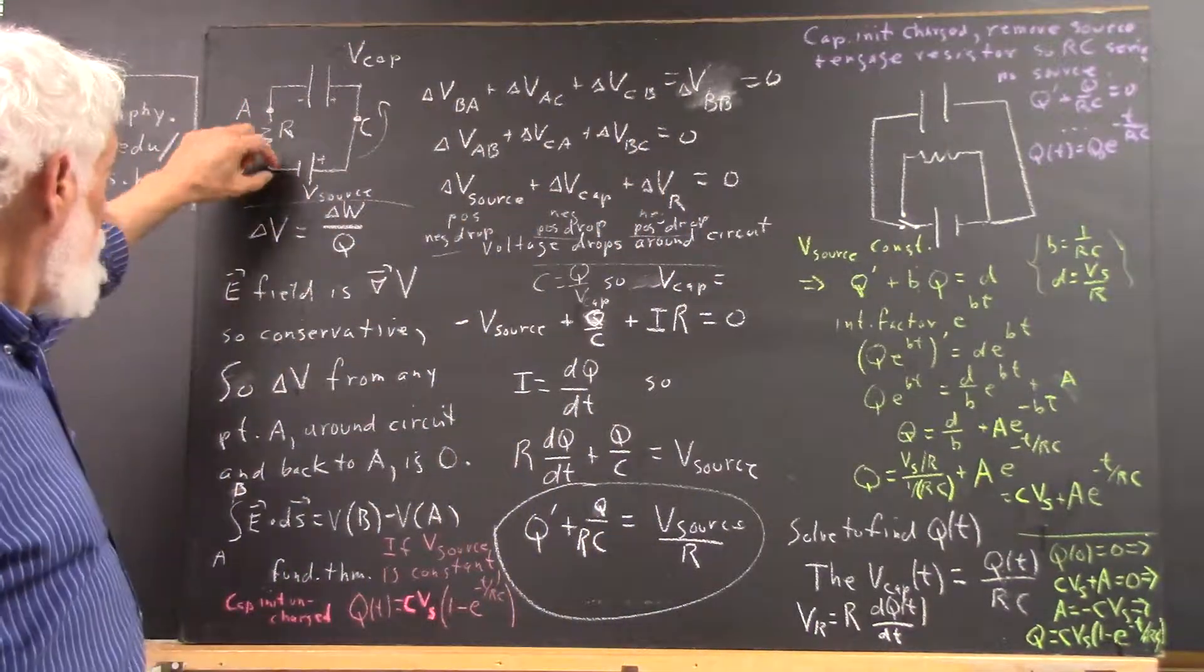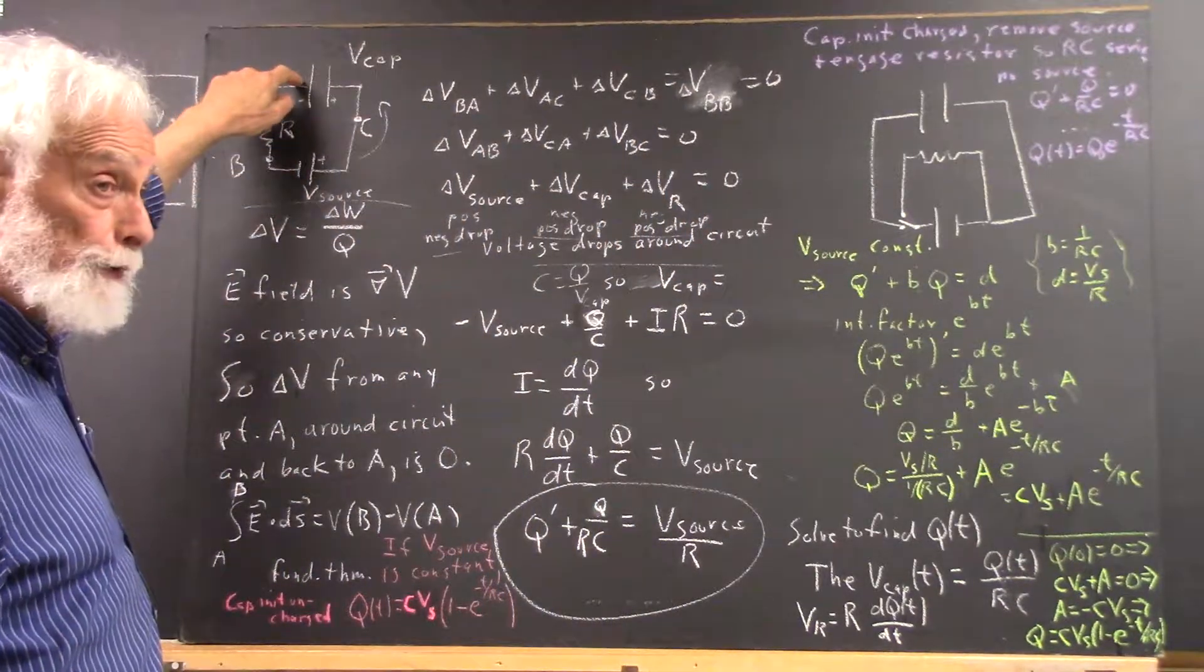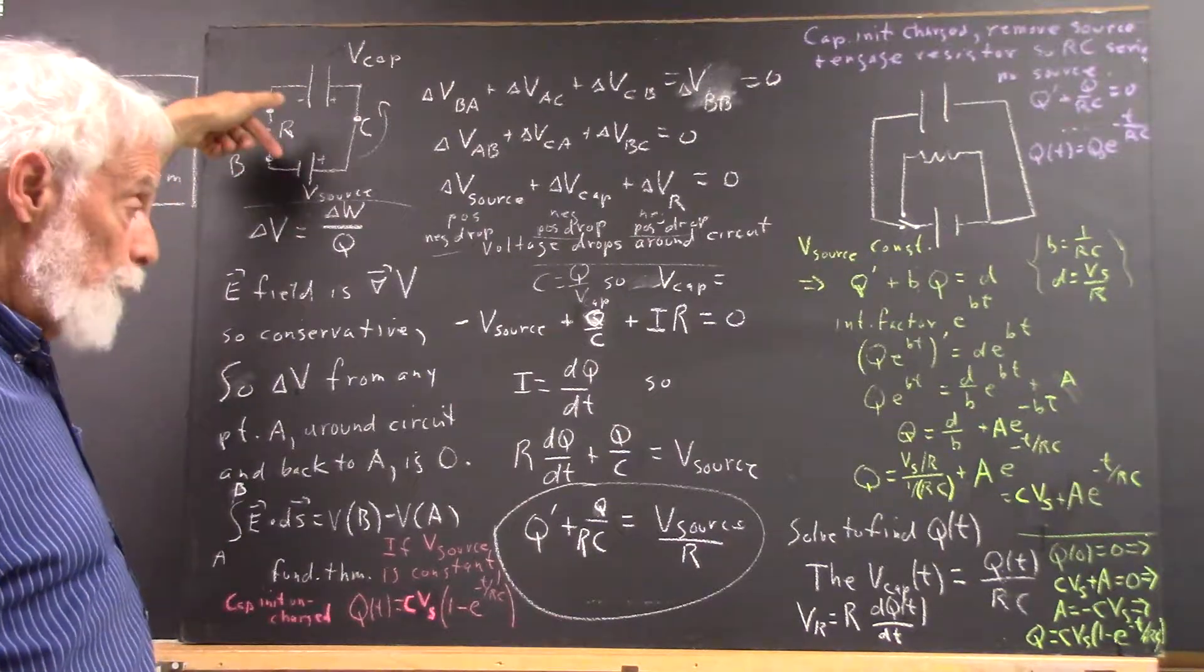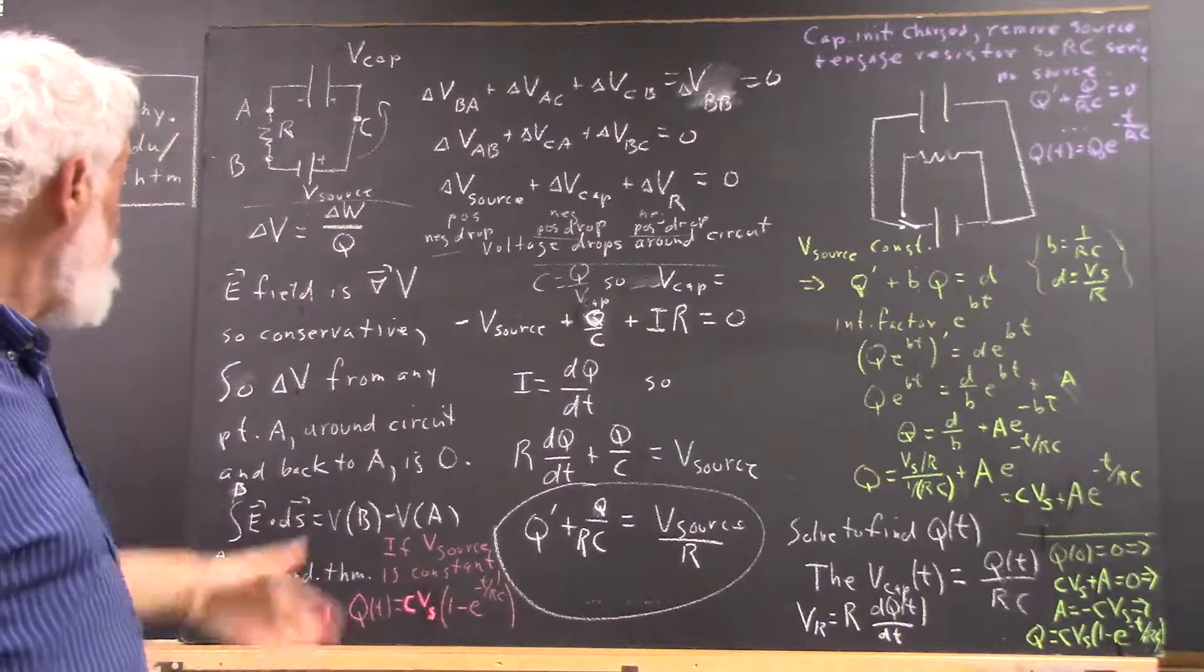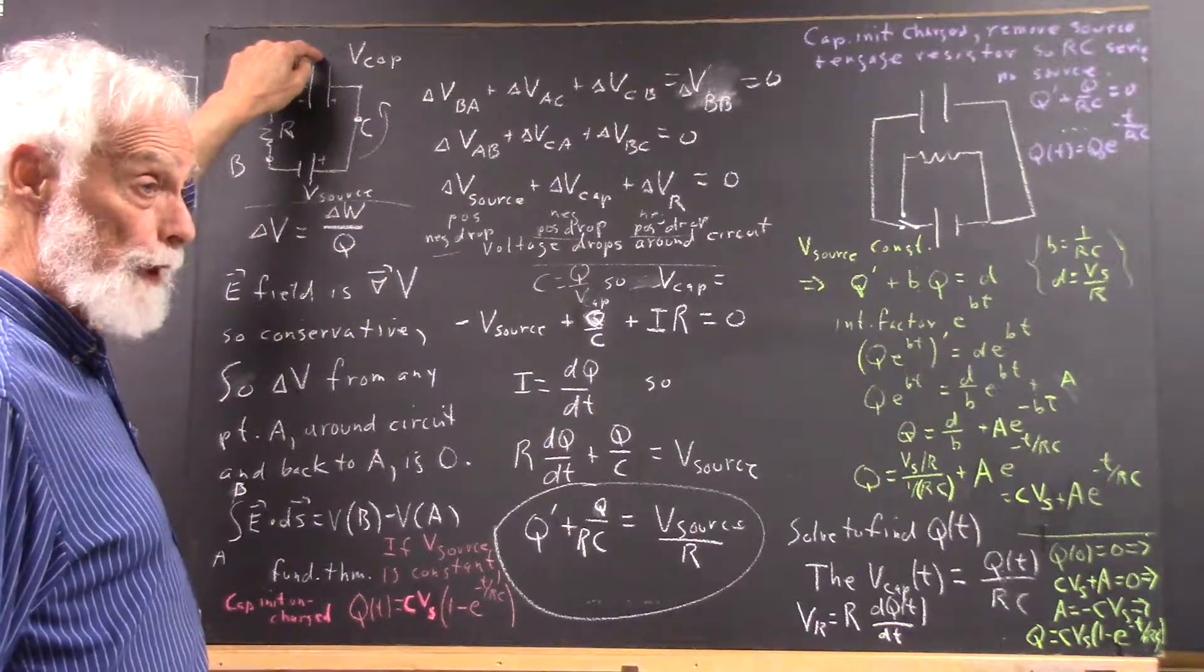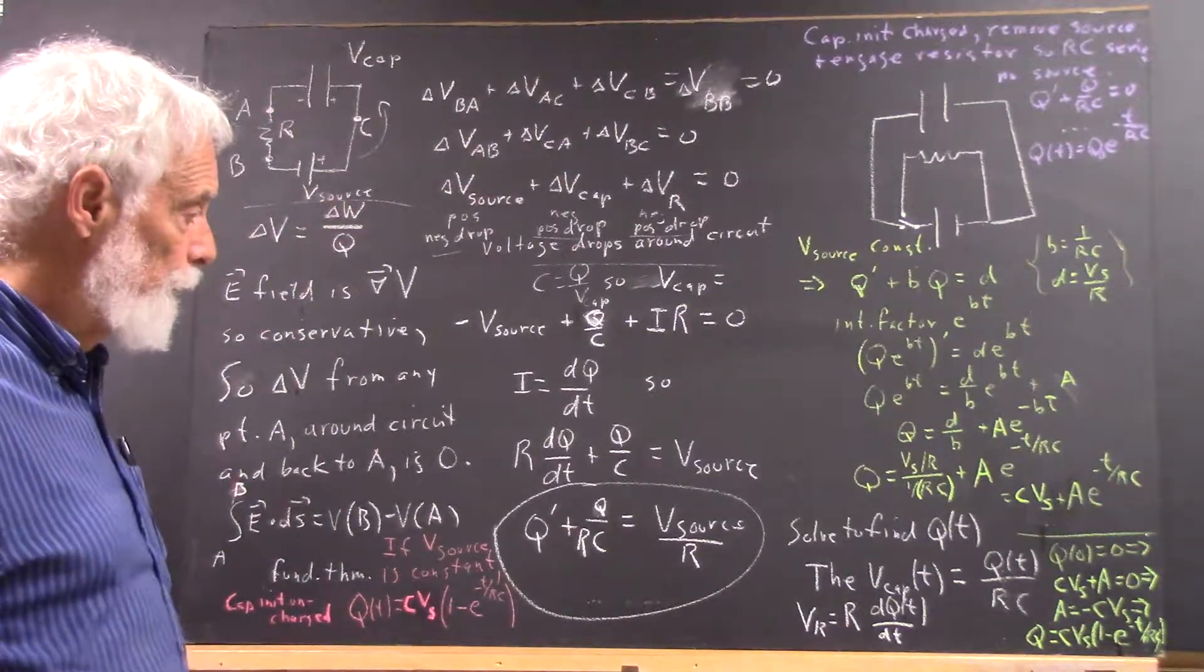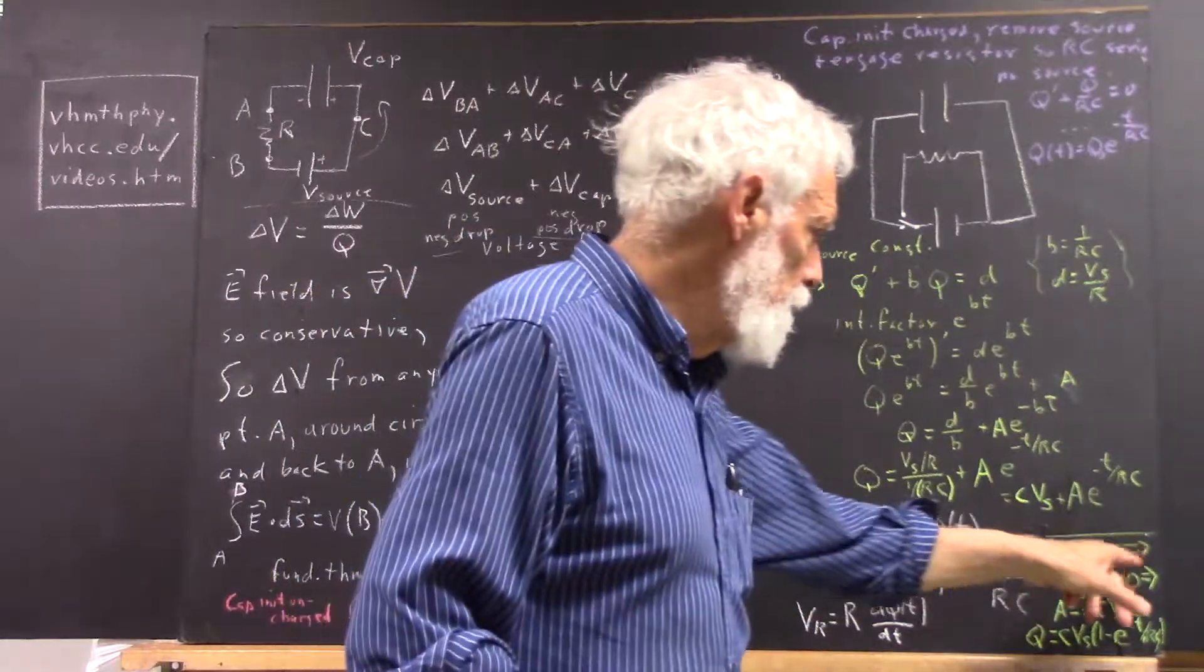If we go to this circuit and imagine there's a switch here, and the capacitor is initially uncharged, and we close that switch at time t equals 0, then our condition is that q, the charge on the capacitor, is 0 when t equals 0. So we have q(0) = 0.